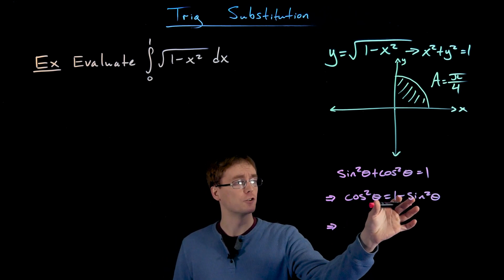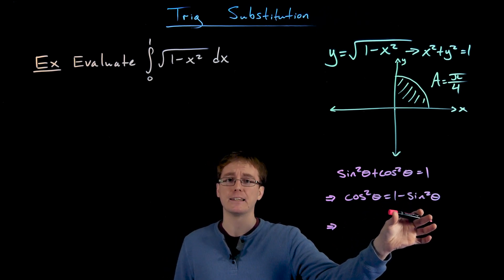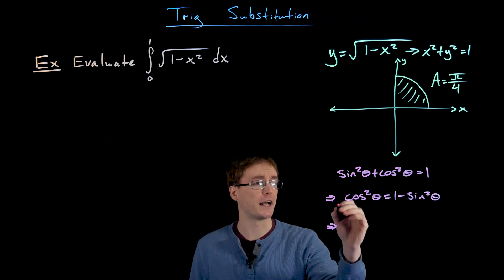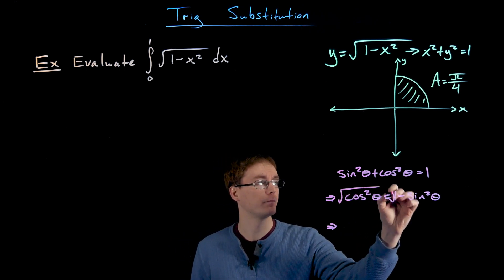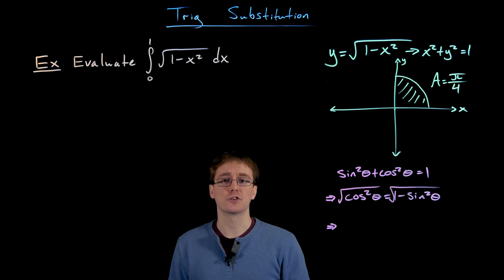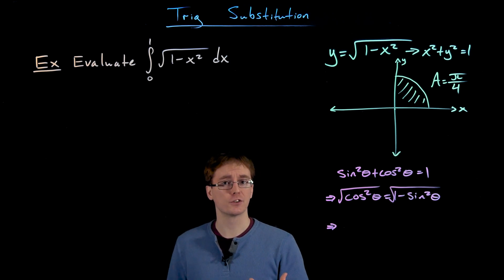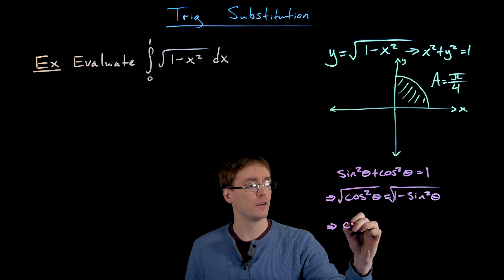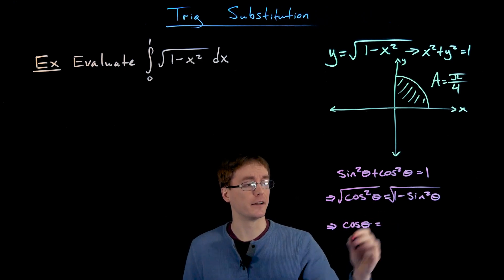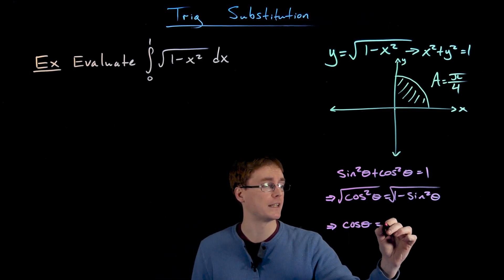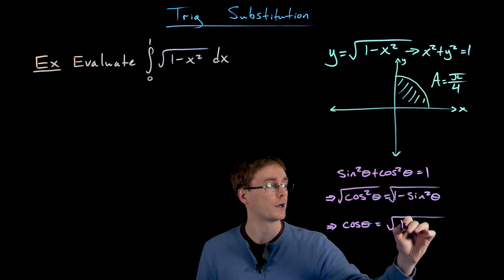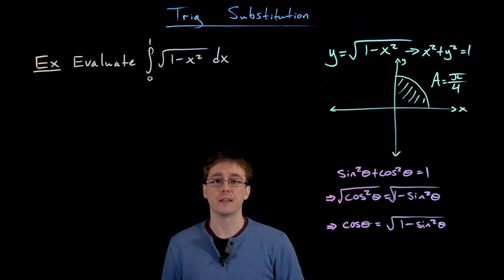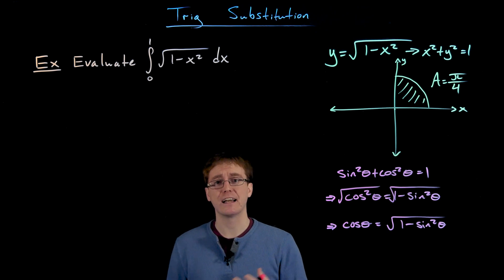To really make our Pythagorean identity look almost exactly like our integrand, we just take the square root of each side. The square root of cosine squared of theta, ignoring absolute value signs, is just cosine of theta. So cosine of theta is now equivalent to the square root of 1 minus sine squared of theta.